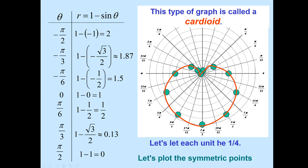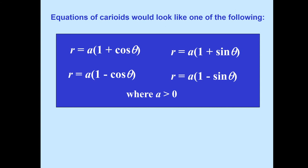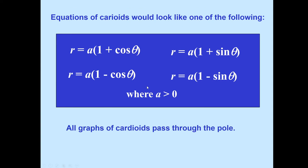This shape is called the cardioid. The equation of a cardioid looks like one of the following — where a is greater than 0: r equals a times (1 plus cosine theta), a times (1 plus sine theta), a times (1 minus cosine theta), or a times (1 minus sine theta). You can see that pattern — it's a constant times a binomial. All graphs of cardioids pass through the pole.